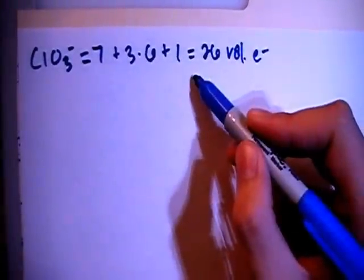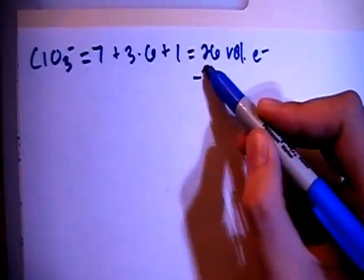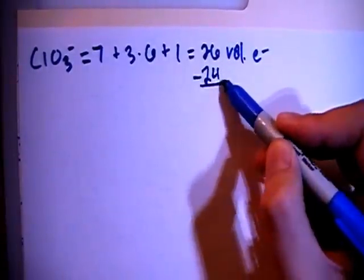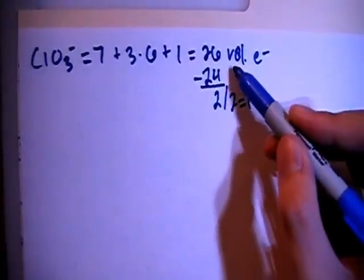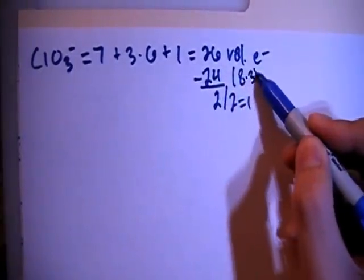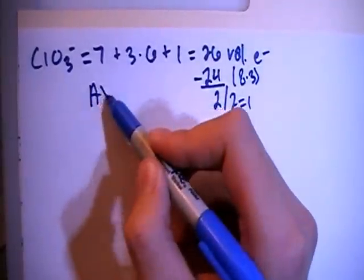So we can subtract out the largest multiple of 8, which is 24. It gives you 2 remaining, divide that by 2, gives you 1, and 24 is equal to 8 times 3, meaning that this is AX3.